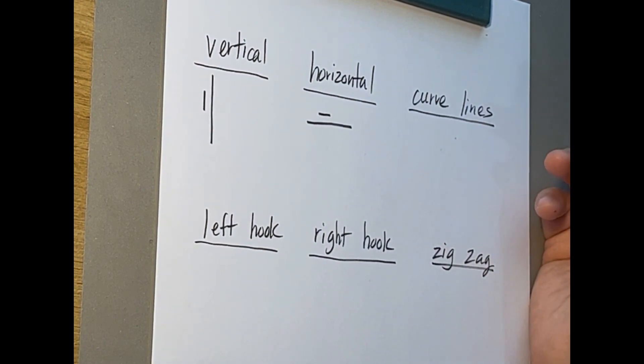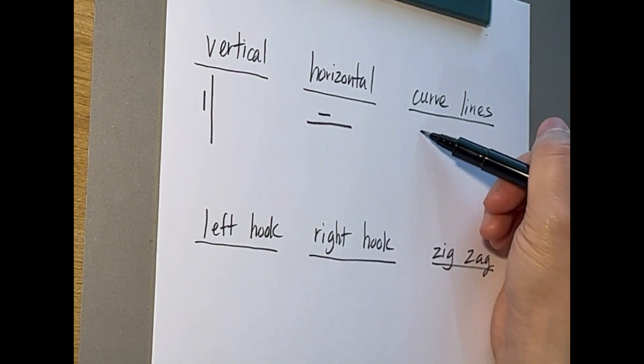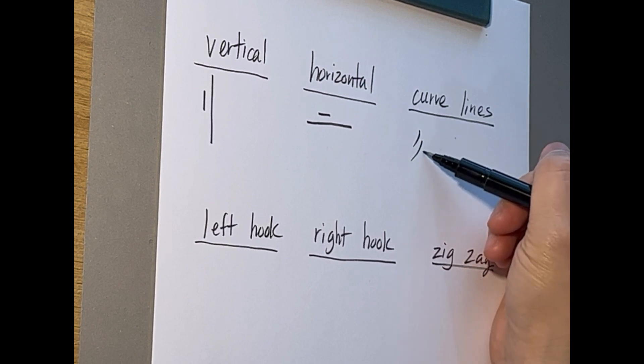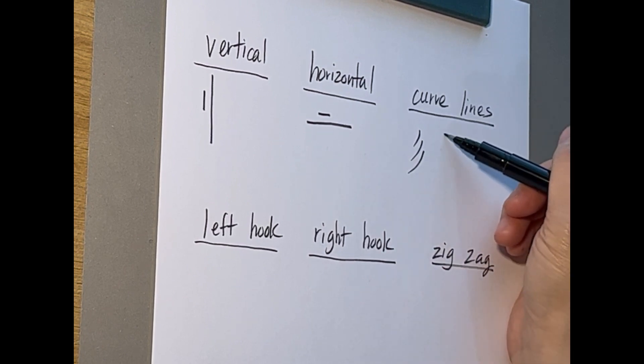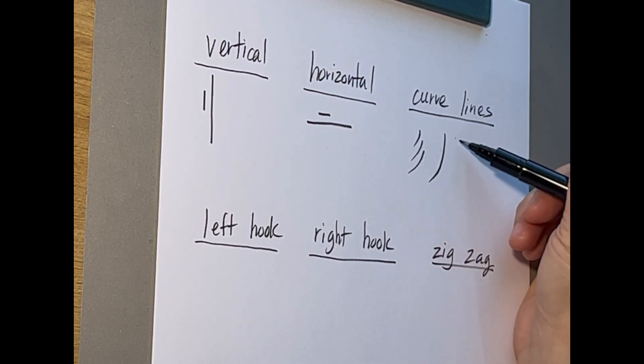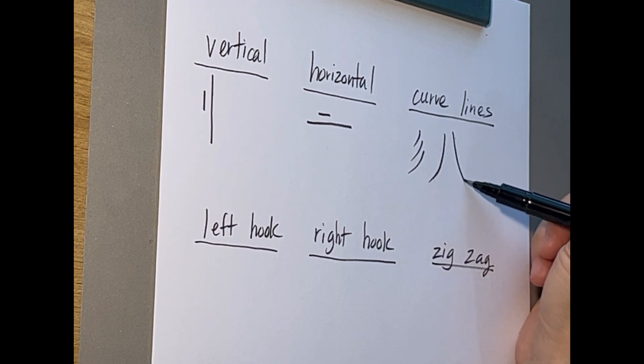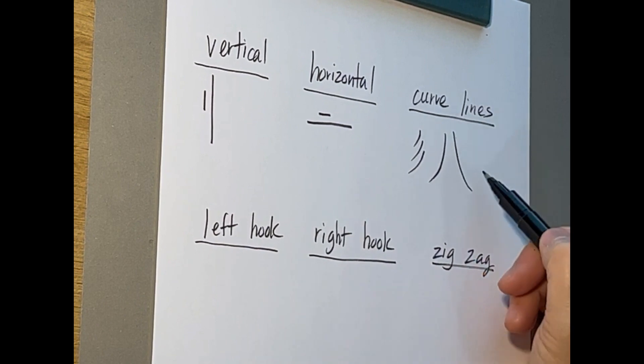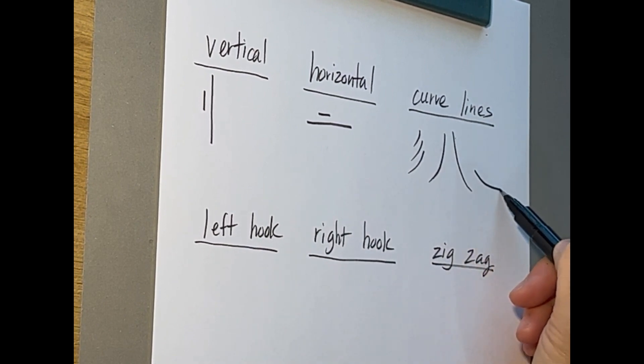And there are various different curved lines. They can go really short like this or really long going to the left and going to the right. And then sometimes they even go like this on the bottom.